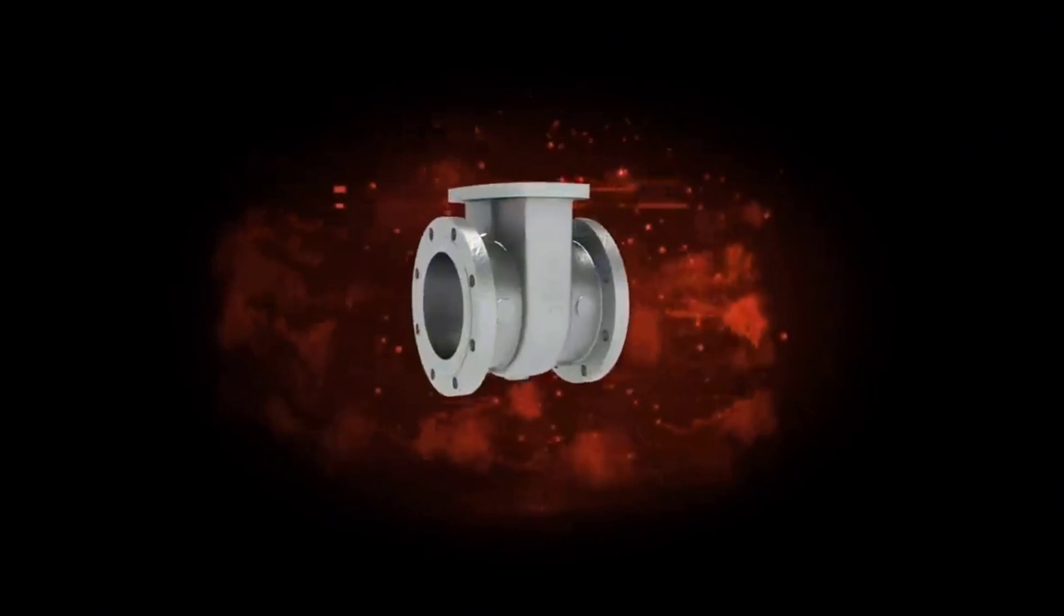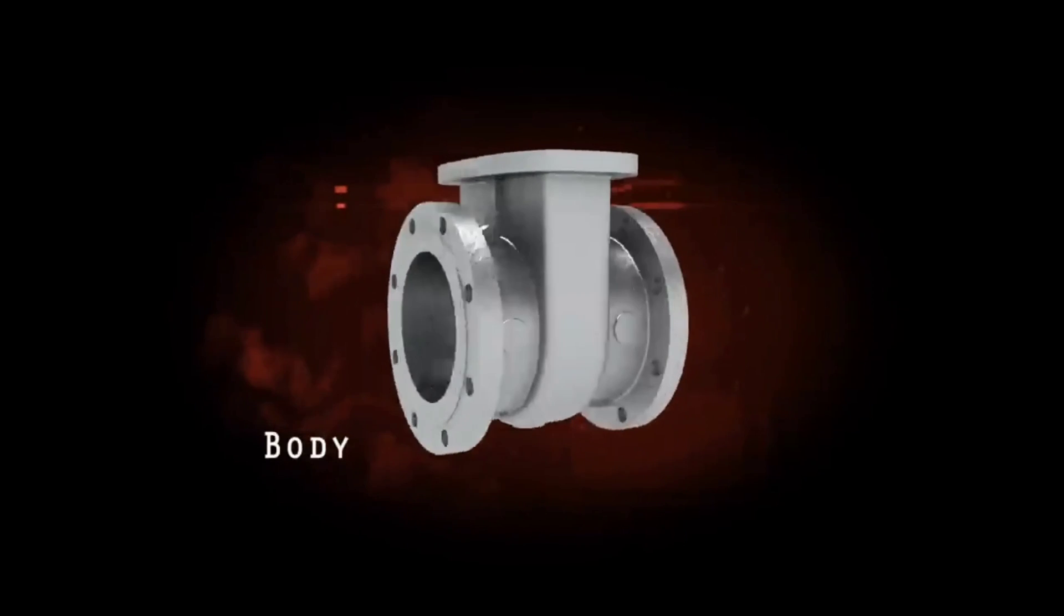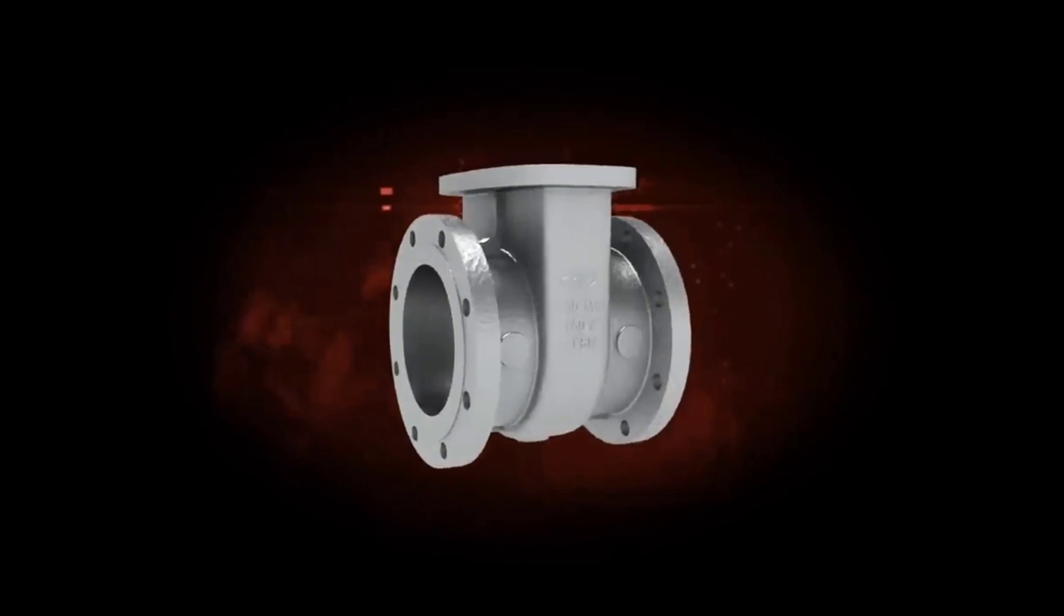Body. The body is the main pressure retaining part of the valve and contains other operational parts such as the gate and seat. Moreover, it provides passage to flow from the valve and is connected to the piping on both ends.